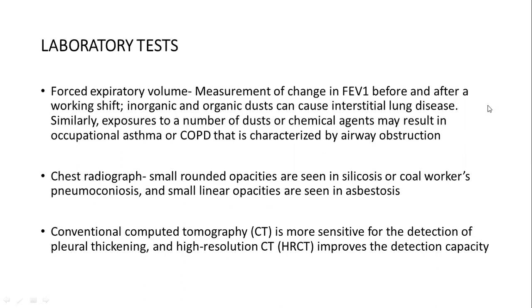The next laboratory test is chest radiograph. You may see small rounded opacities typically seen in silicosis or coal workers' pneumoconiosis, or linear opacities as in asbestosis. In suspected cases, you can also order conventional computed tomography, which is more sensitive for detection of pleural thickening, especially in asbestosis — that is, in patients who have had occupational exposure to asbestos.